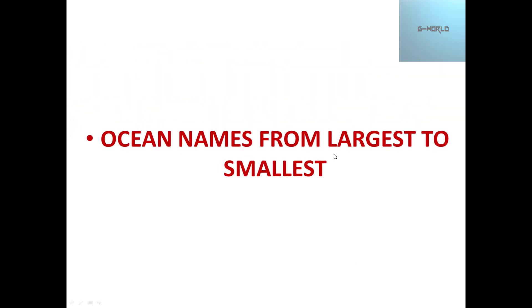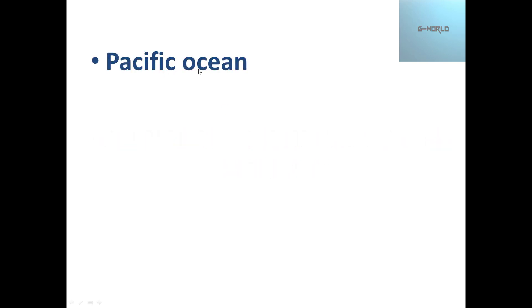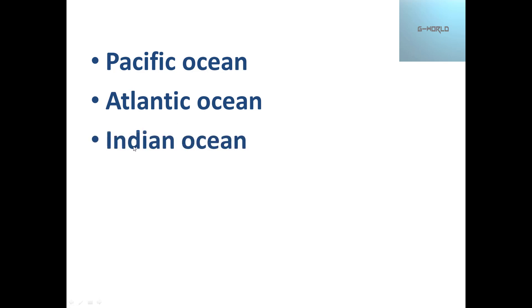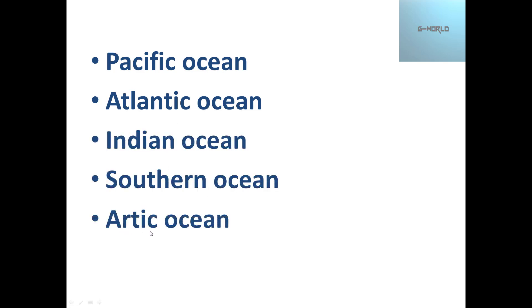Now we are going to go to the oceans, from the largest to smallest. The largest ocean is the Pacific Ocean, followed by the Atlantic Ocean, the Indian Ocean, the Southern Ocean, and the smallest is the Arctic Ocean. This is our ocean list which we should remember.